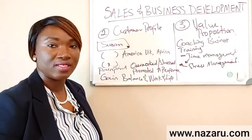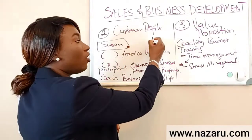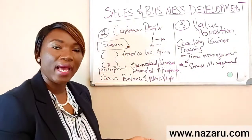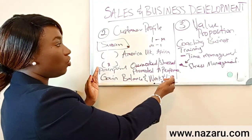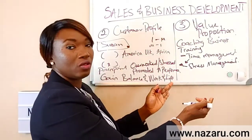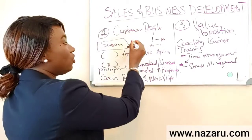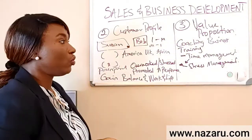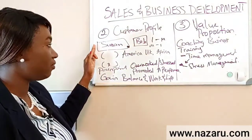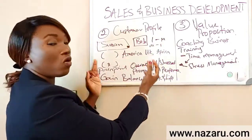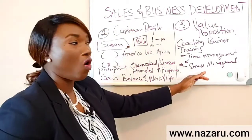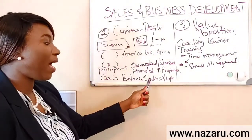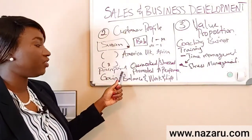One thing to note is that your customer profile and your value proposition could be one-to-many, many-to-one, one-to-one, or many-to-many. One customer profile could be served with one value proposition, or many types of customer profiles — for example, Susan and Mr. Bob — could have similar pain points and consume the same value proposition. You could also have several value propositions for the same customer. This is an exercise you want to do for each customer profile you hope to serve, then work on your proposal to them. It's a very fun exercise because it helps you map your proposed solution to your potential clients.